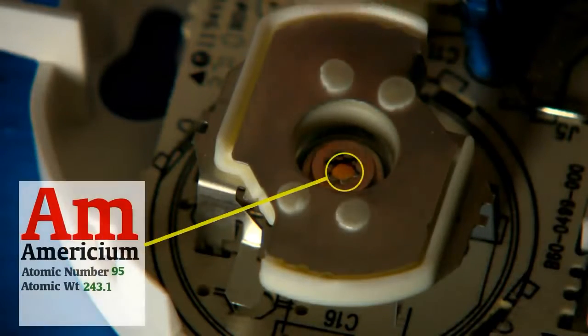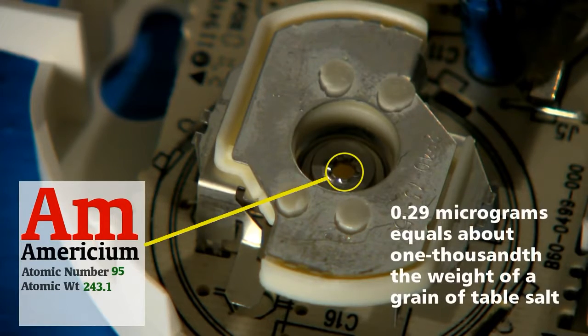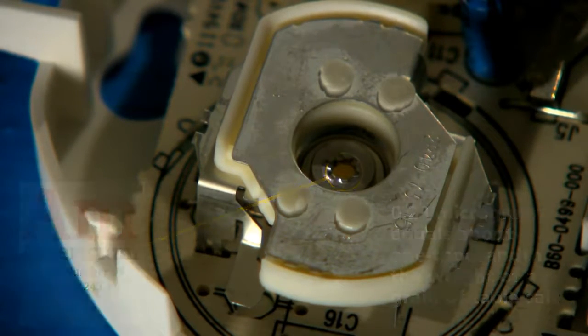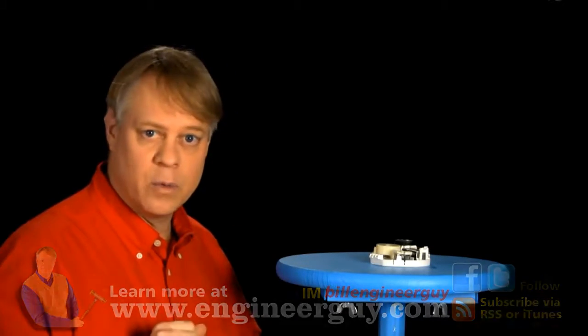Tucked in here lies about one microcurie of radioactive americium-241. That's about .29 micrograms. That tiny bit of radioactive material generates a small current that makes the detector work.